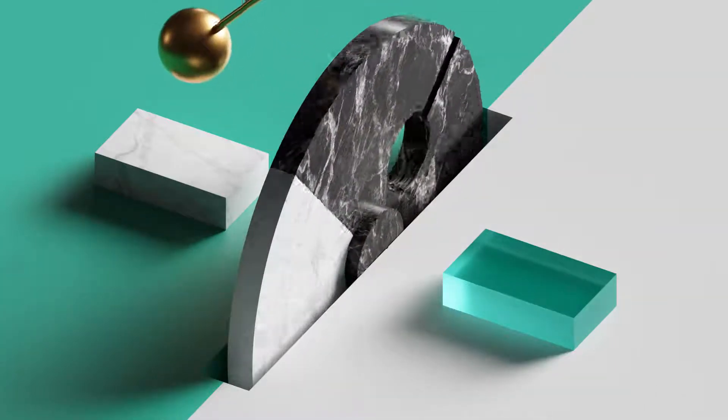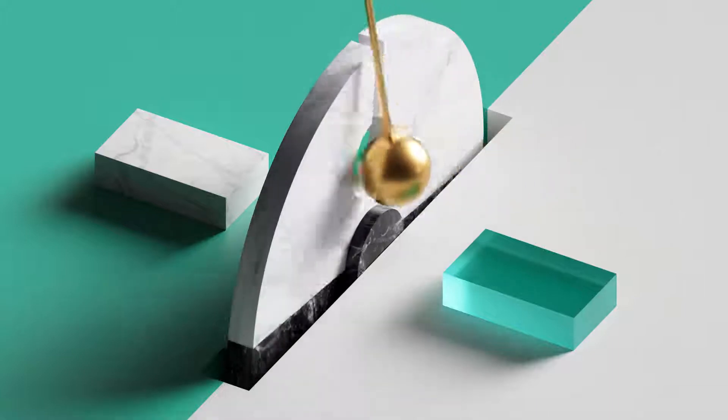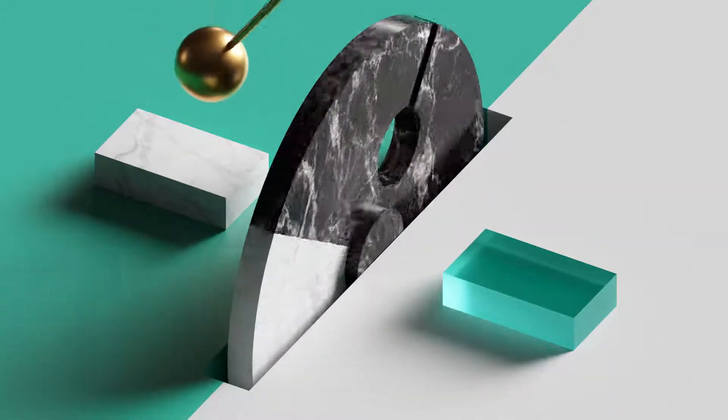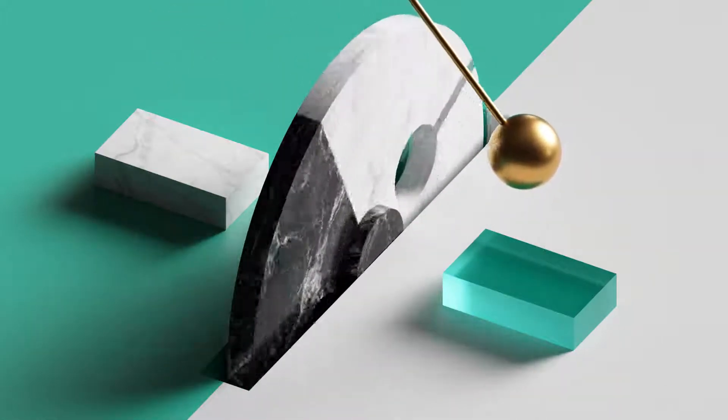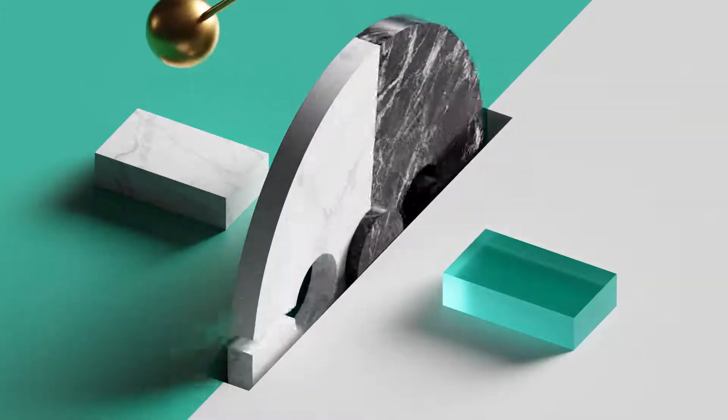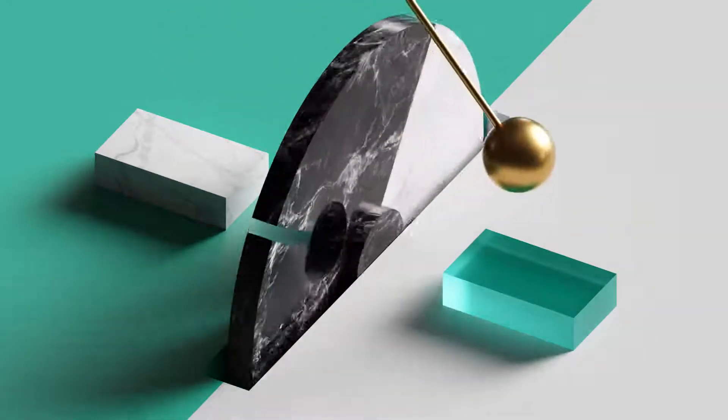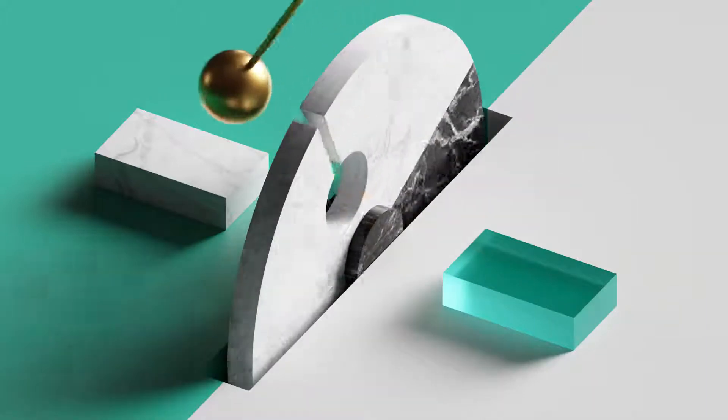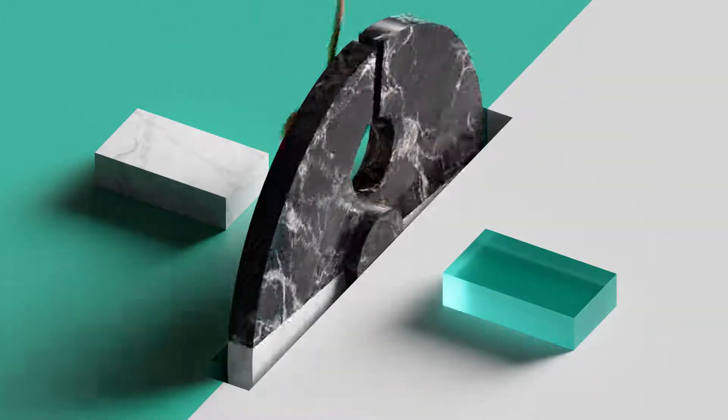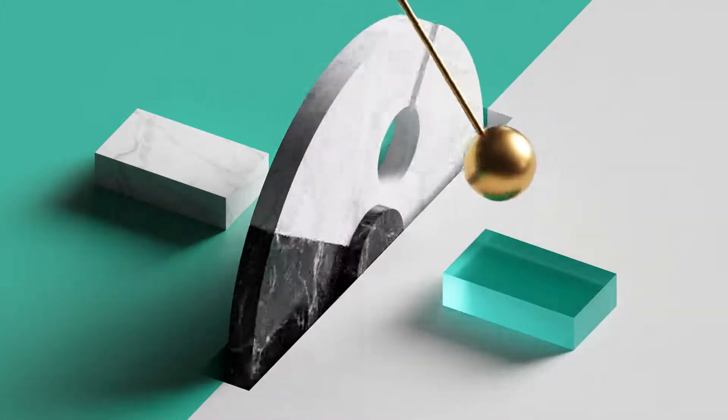From Zedad, the border will continue east to Ziphron and end at Hazar Enon. The eastern border will begin at Hazar Enon in the north, then run south to Shiphon and on down to Riblah on the east side of Aen.